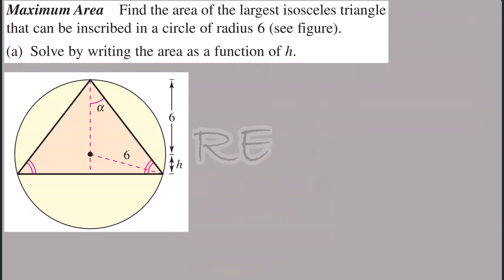According to the figure, the distance from the vertex to the center is six. This is the radius, and the distance from the center to the base of the triangle will be called lowercase h.